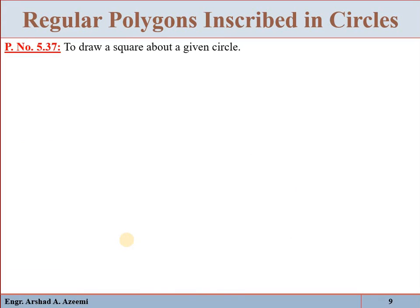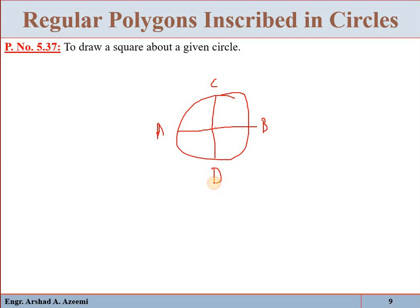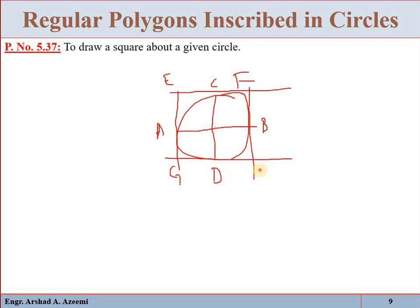Problem 5.37: to draw a square about a given circle. Suppose a circle is given and we have to draw a square about it. Draw the horizontal diameter AB and the vertical diameter CD. At points A, B, C, and D, draw tangents — a horizontal line at C and D, and a vertical line at A and B. The resulting figure EFGH is the required square about the given circle.